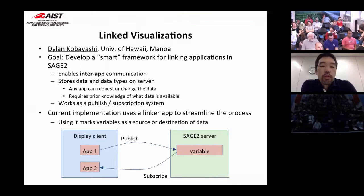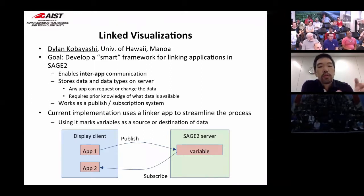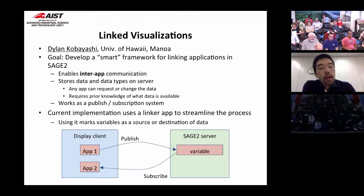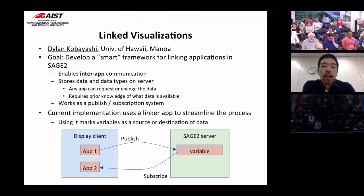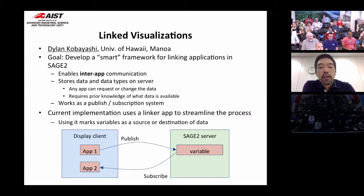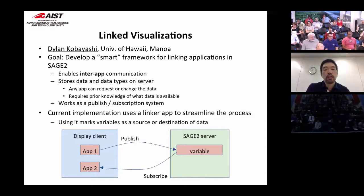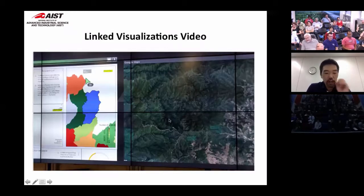We've also been working on linking visualizations in SAGE2. A student from Jason Lee's lab, Dylan, developed a smart framework for inter-app communication in SAGE2, allowing one application to communicate with another. It stores data and data types on the SAGE2 server, and any app can request or change that data. Currently it requires prior knowledge of what data is available and works as a publish-subscribe system. The long-term goal is to just throw data on the wall and have it know what to do with it. Dylan created a linker application that marks applications as source or destination of data.